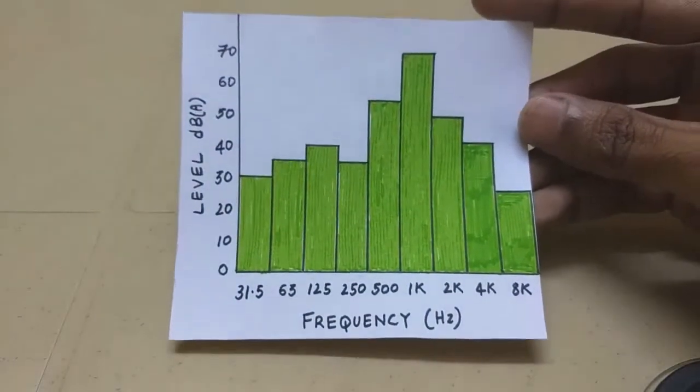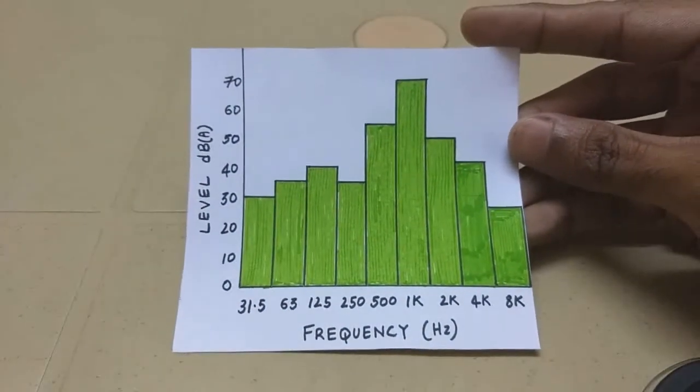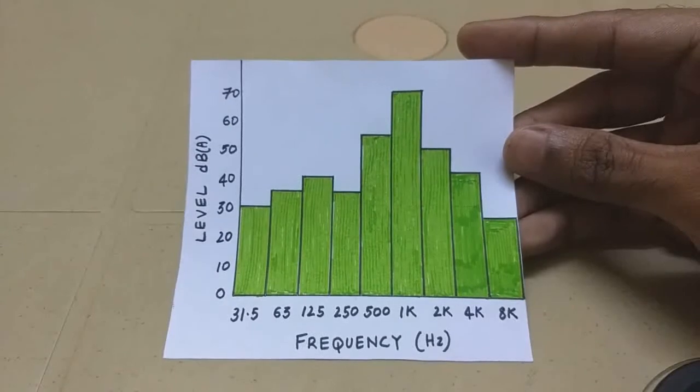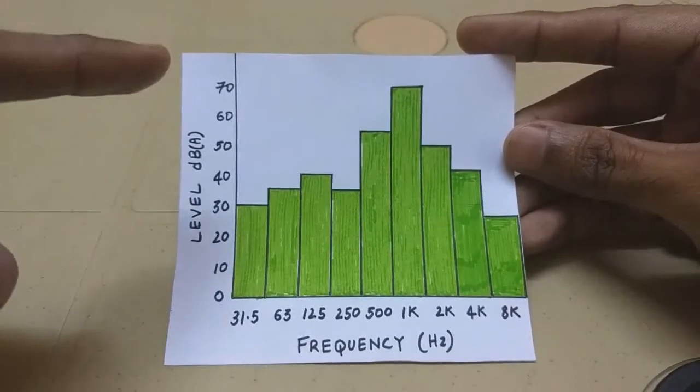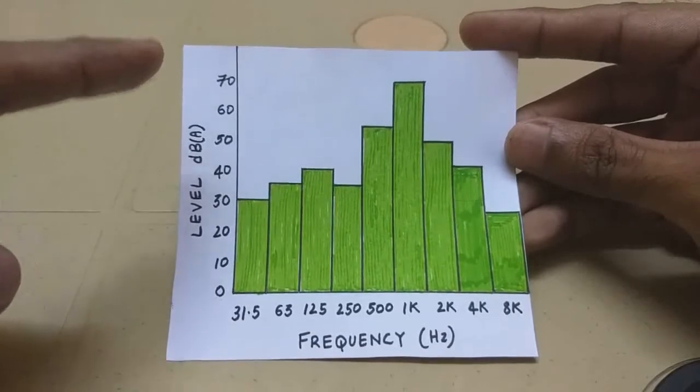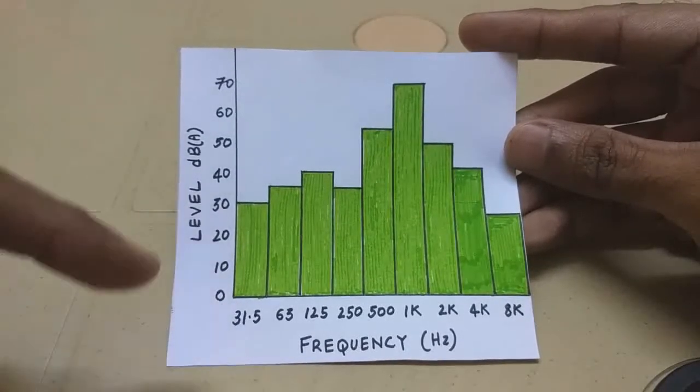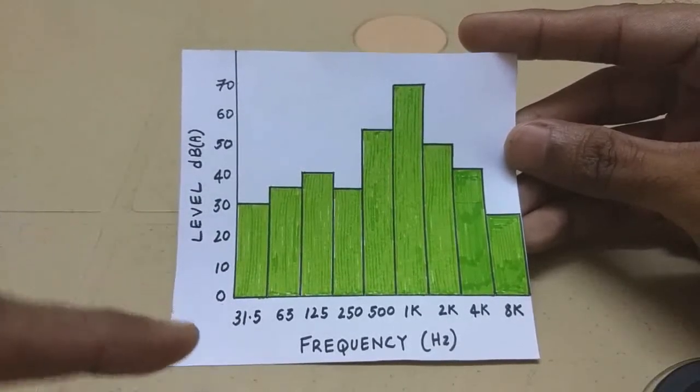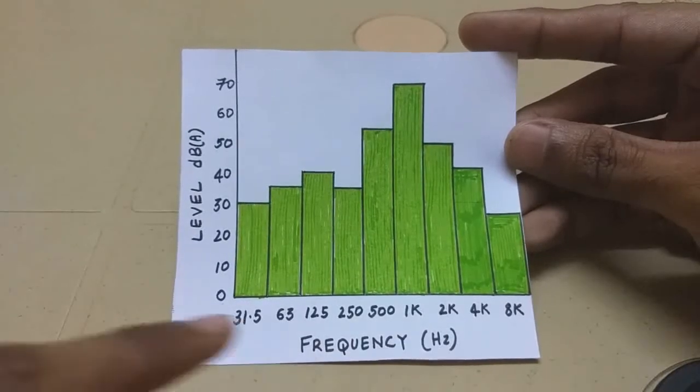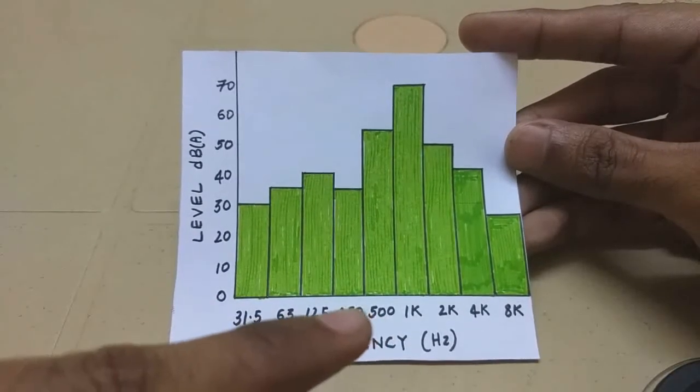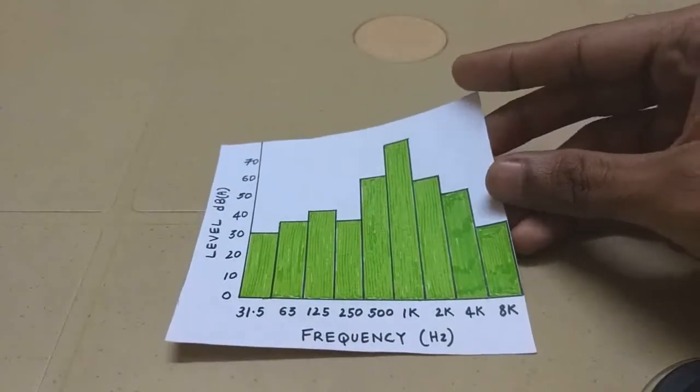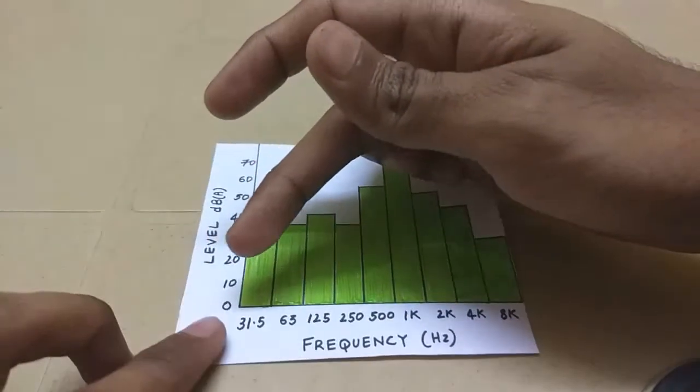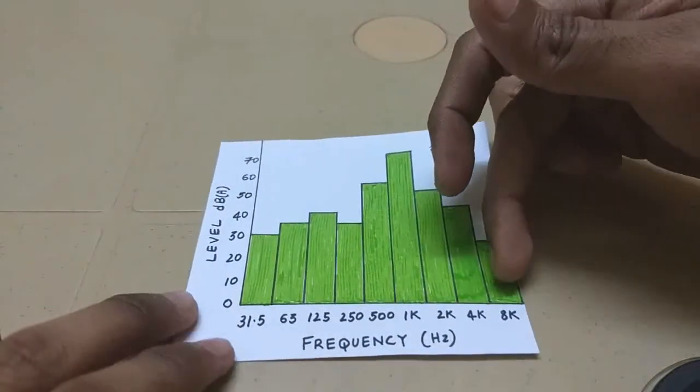So this is how an octave band looks like. This is actually a one by one octave band. Now as you can see here, the octave band, the octave plot is a plot of sound pressure level in decibel along the y-axis over the frequency along the x-axis. Now if you look at this octave plot, it spans a broad frequency range along the x-axis.